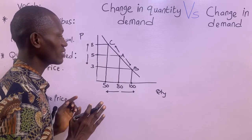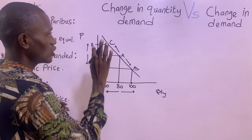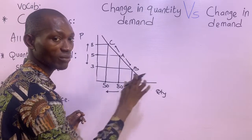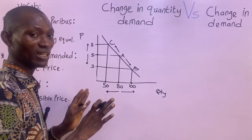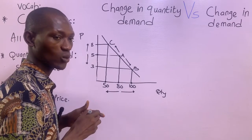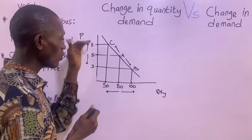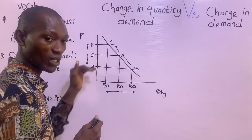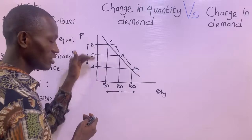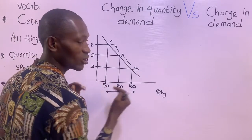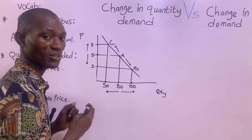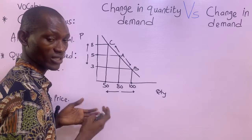So change in quantity demanded gives you movement along the demand curve, and that is primarily due to changes in the price of the commodity in question. When the price of the commodity changes, quantity demanded also changes. Increase in price leads to decrease in quantity demanded; decrease in price leads to increase in quantity demanded.